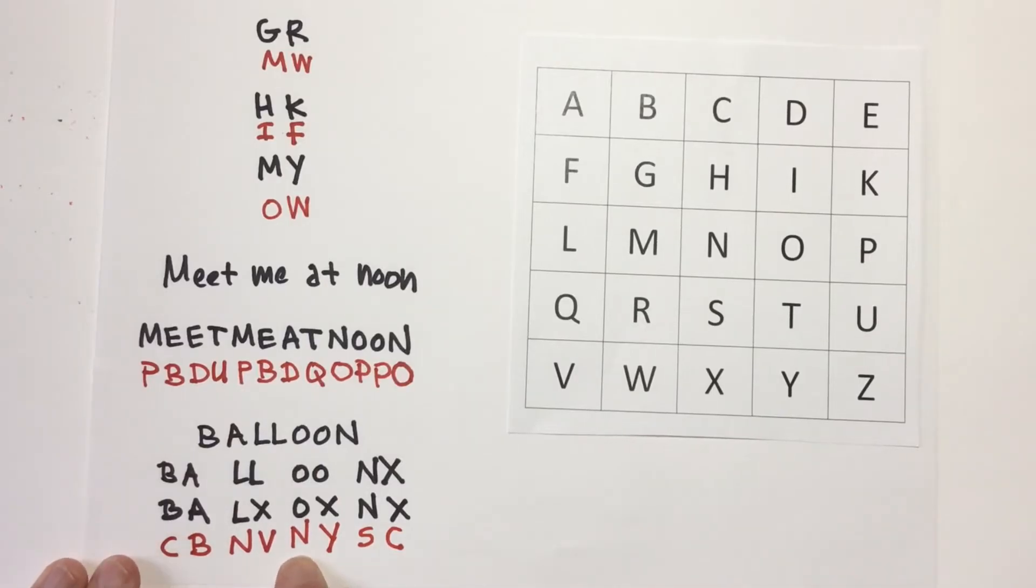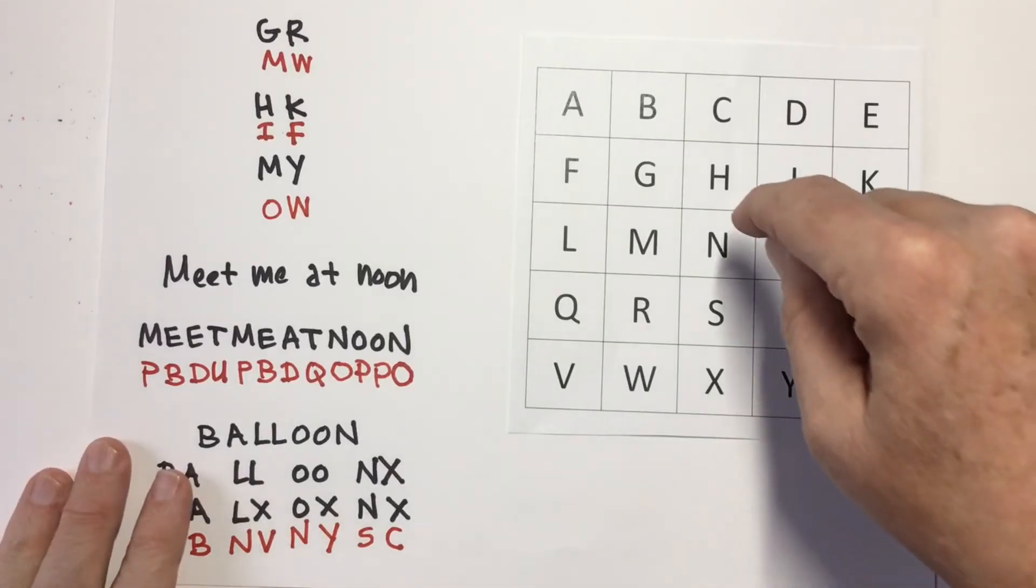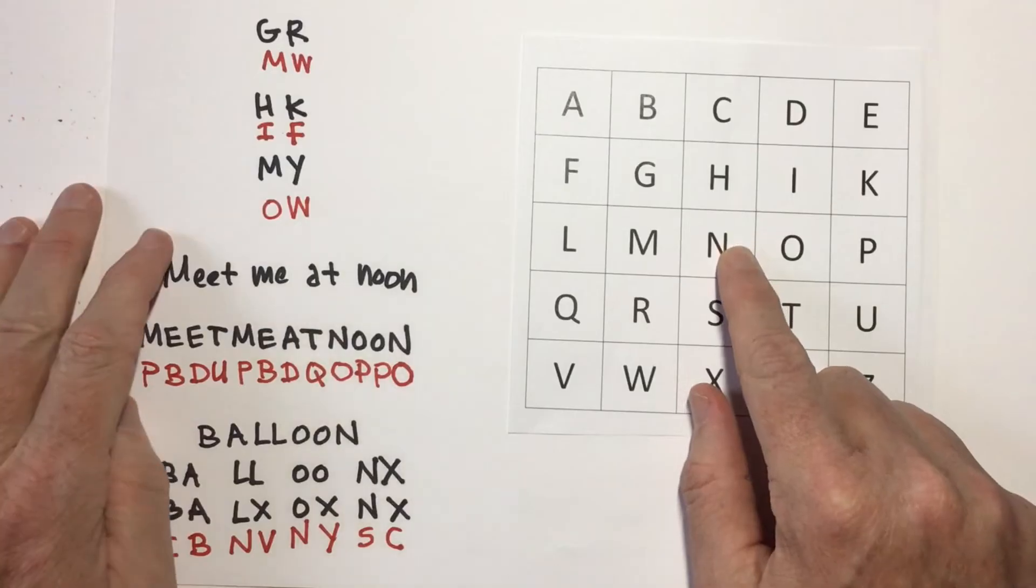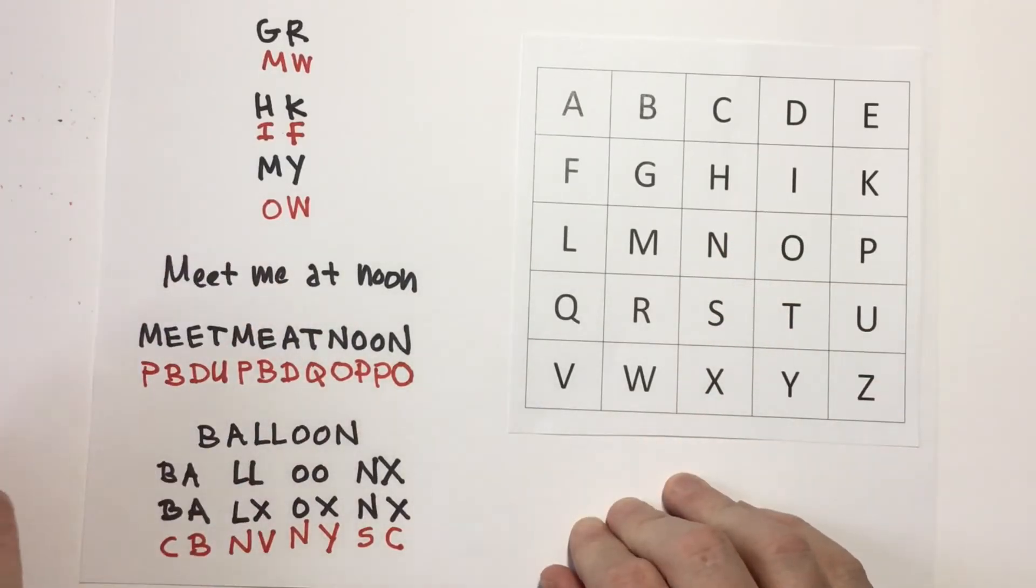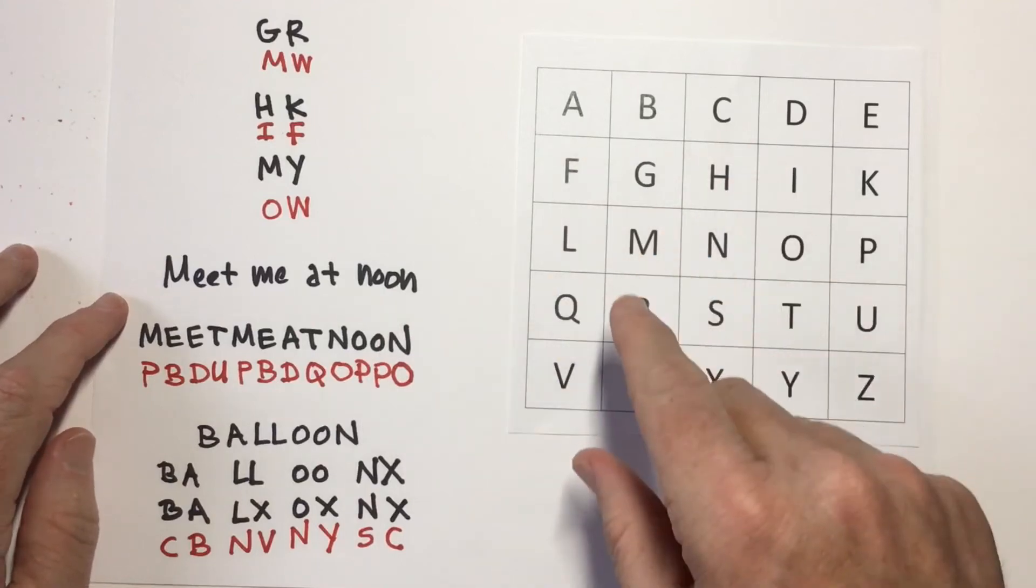So, the word balloon comes out as C-B-N-V-N-Y-S-C. Again, that's very devilish because I have two N's that represent an L and an O. The X is represented three times, but it comes out as a V, a Y, and a C. Who would ever know that that spells balloon? Now, obviously, anybody would know if they knew what grid you were using and that you were using. So, there's something we can do about that, too. But before we get into that, okay, that's how the code works.